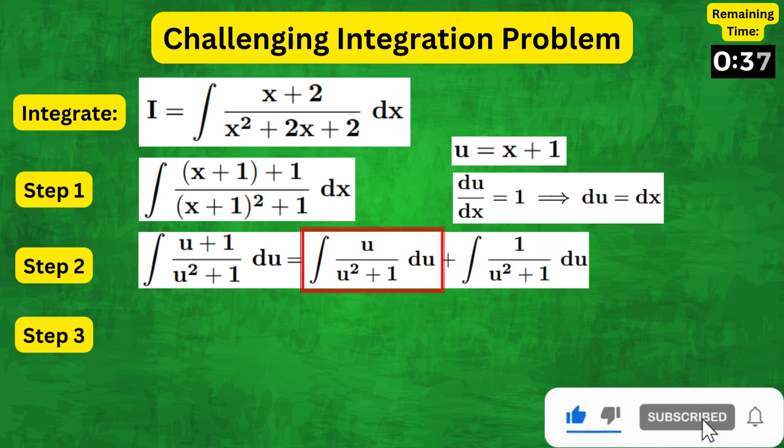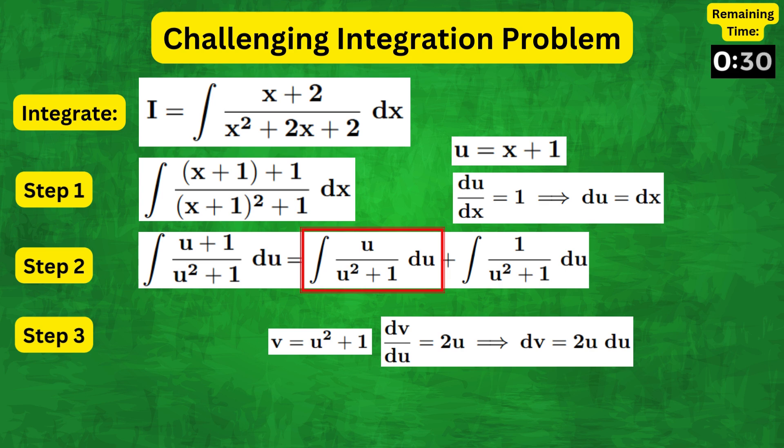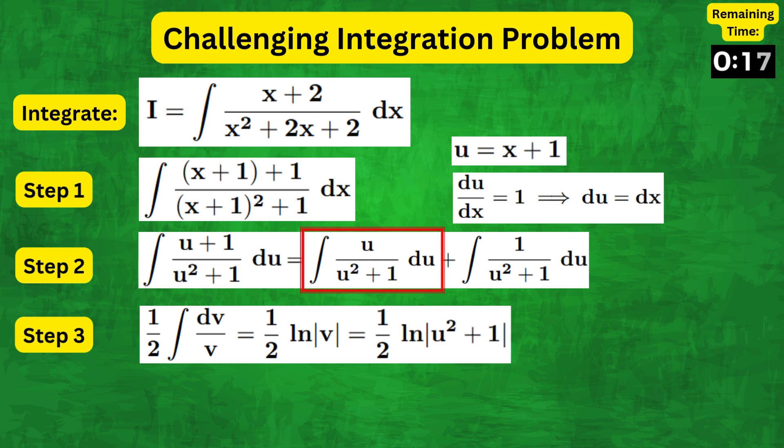For the first integral we can use another substitution v equals u squared plus one so that dv equals two u du. Then writing it in terms of v we get a half integral of dv over v, which is a half natural log of v or a half natural log of modulus of u squared plus one.